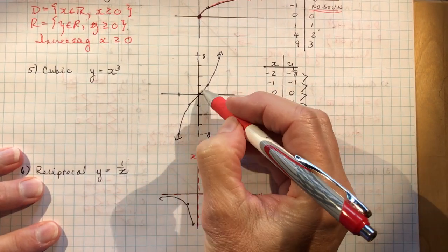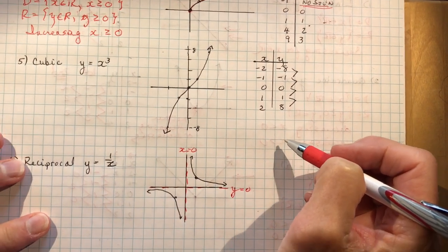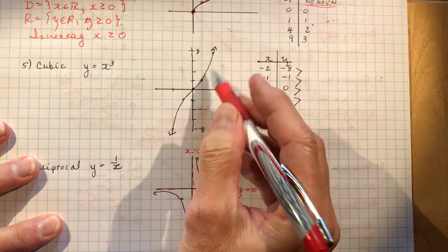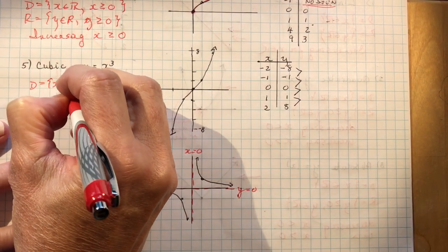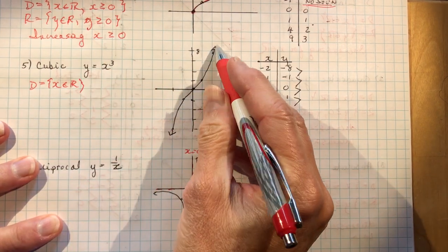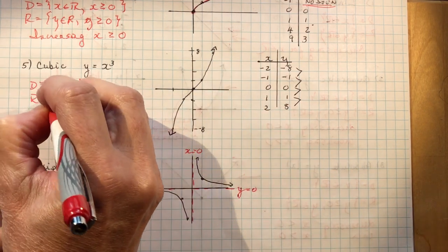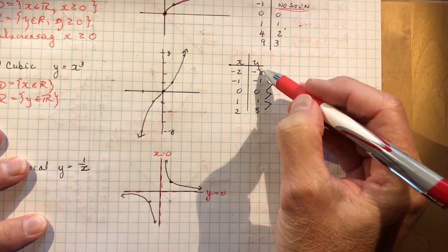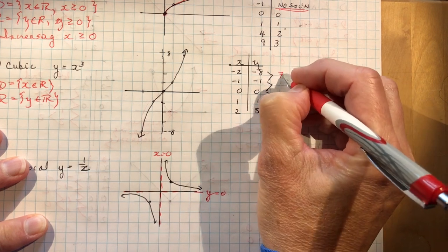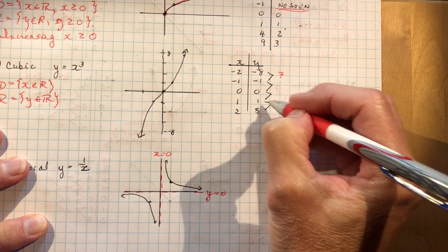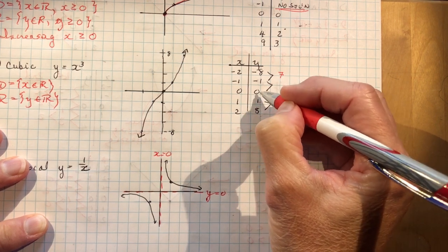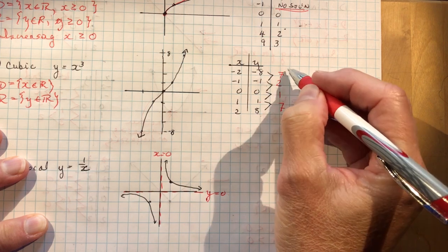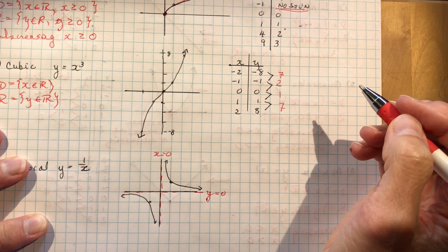A cubic function looks like this. This is not part of the grade 11 curriculum, but it doesn't hurt to know more difficult things. Just like with linear and quadratic functions, the domain is real numbers — I can put in anything for x and get an answer for y. The range is also y is an element of real numbers. For first differences: 8 minus 1 is 7, 1 minus 0 is 1, 0 minus (-1) is 1, and -1 minus (-8) is 7. So I have 7, 1, 1, 7 — that's not linear, obviously.